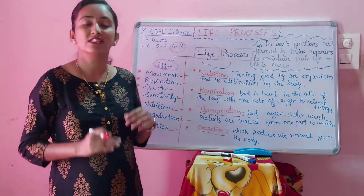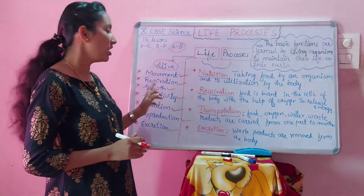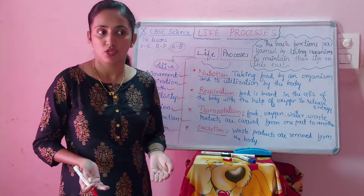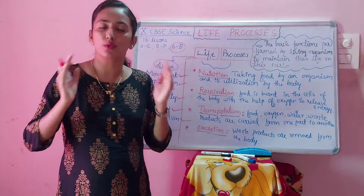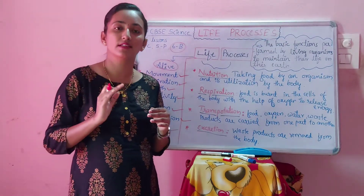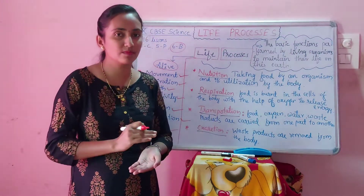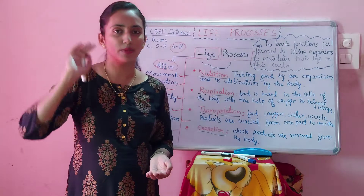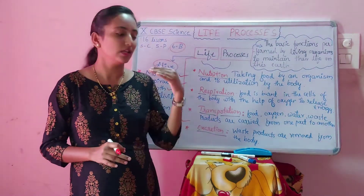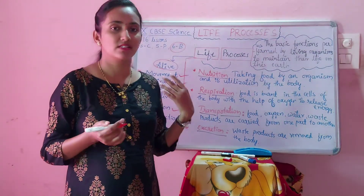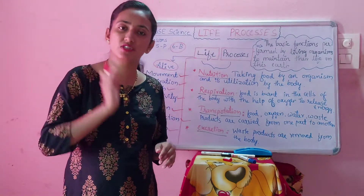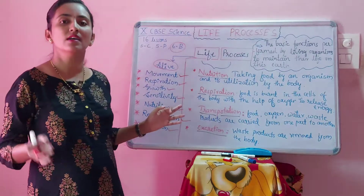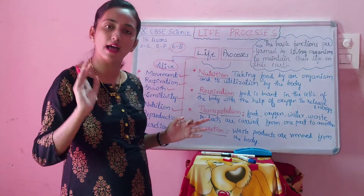Next we will go to growth. It is an observable property. We can see the change in size and shape of living organisms. Take your own example — you were very small when you were born, and now you are grown. Plants also start very small and after some years grow into big trees. All living organisms show growth. Non-living organisms like a pen, chair, or table remain in the same shape and size for a longer time — they do not show any growth. By observing growth, we can identify a living organism.